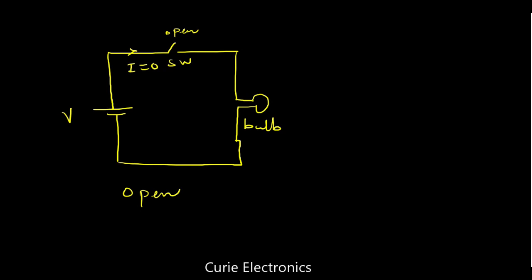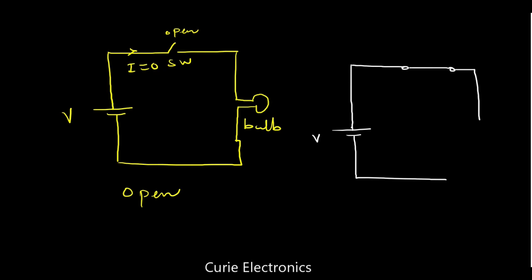Let us see what is closed-circuit. In a closed-circuit, we will have a voltage source — this can be AC or DC voltage source. Then the switch is closed. Then we have the load — let us consider the bulb. The current flowing through the circuit is I and the bulb glows now. This is the closed-circuit. In a closed-circuit, current flows.